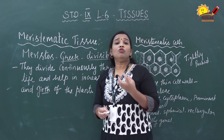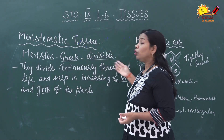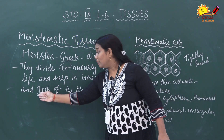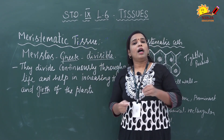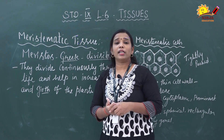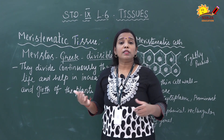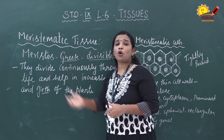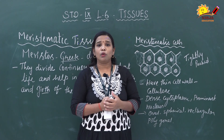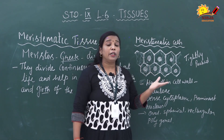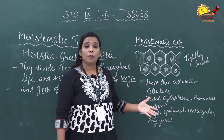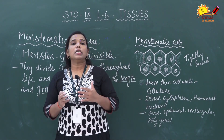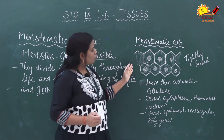Meristematic tissues have a unique feature: they divide continuously throughout the life of the plant, and this helps in increasing the length as well as the girth of the plant. Because of meristematic tissues, plants have unlimited growth, whereas animals and humans have limited growth. Meristematic tissues are made up of meristematic cells, which can be in different shapes — circular, oval, spherical, rectangular, or polygonal — depending on their location or occurrence.